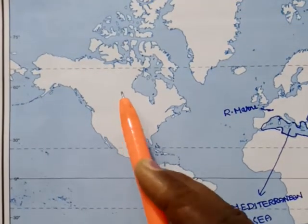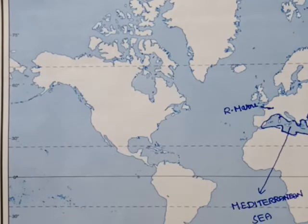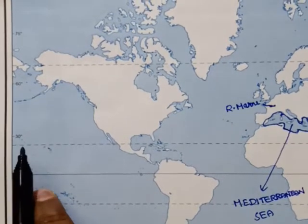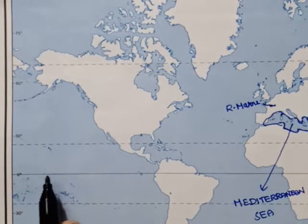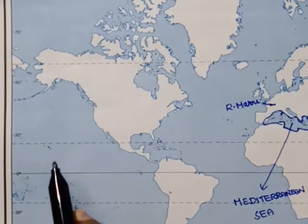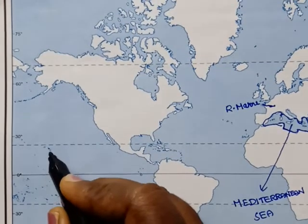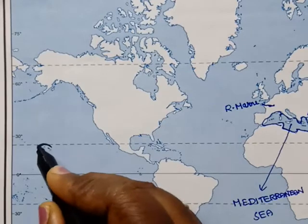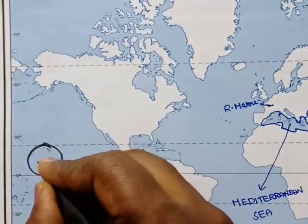This is North America, this is South America. Let's talk about Hawaii Island — this is Hawaii Island. This center line is the Equator. We have to place the dotted line, so let's put a circle on Hawaii Island.